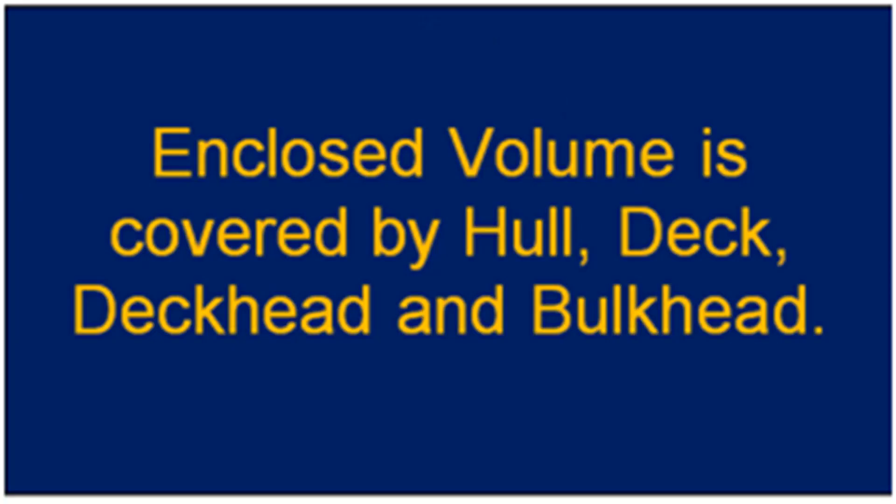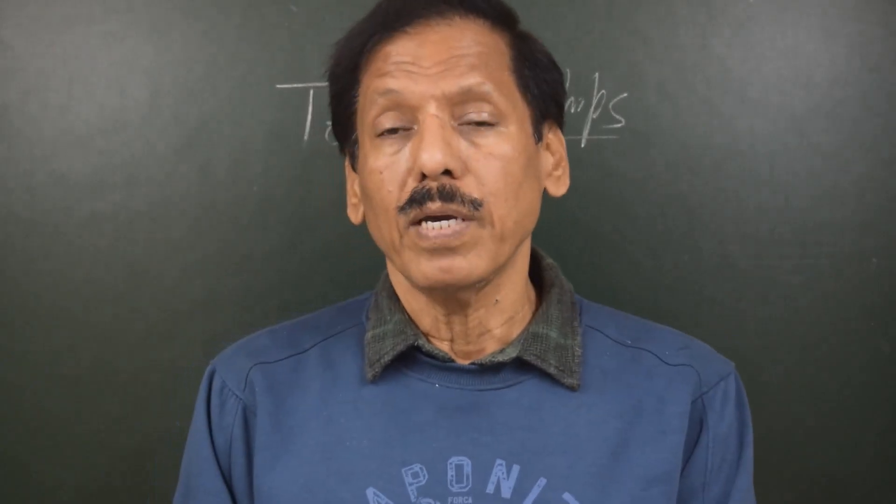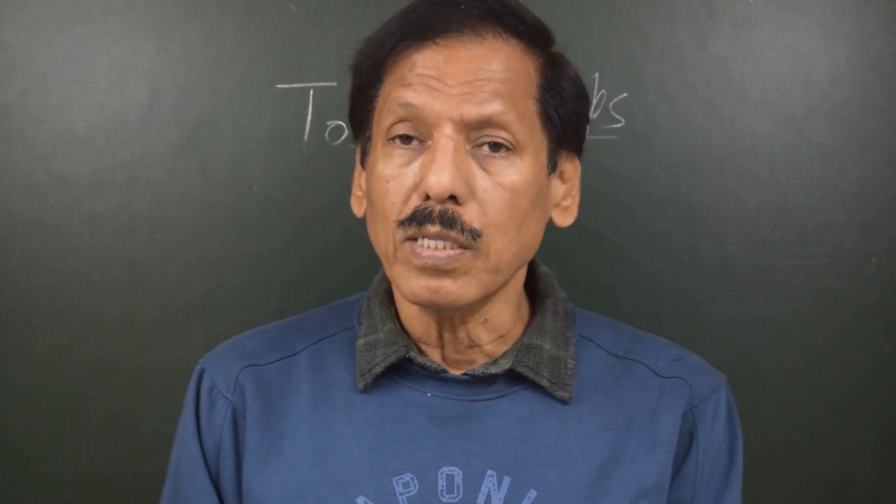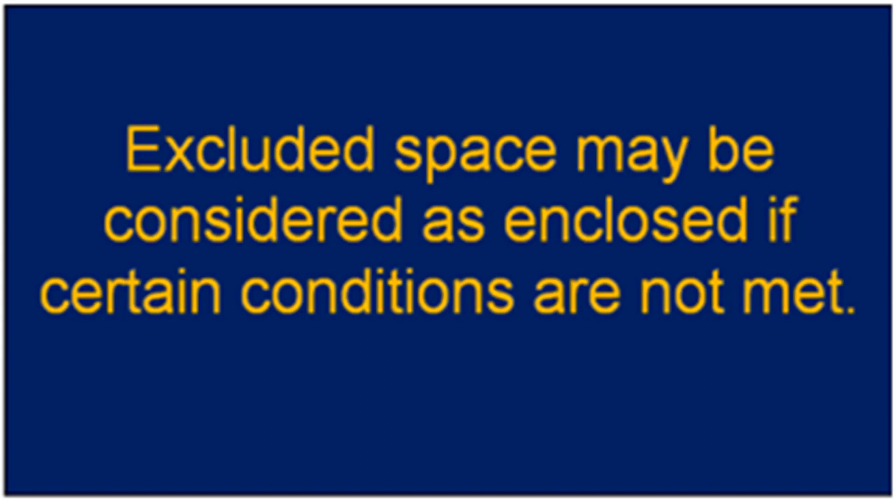Now in my next video, we will see how the calculation is done for gross tonnage and net tonnage. We will see different examples, and from examples we will see what kind of spaces can be exempted. So they are called excluded spaces. What are the rules in respect of deciding what place is excluded?